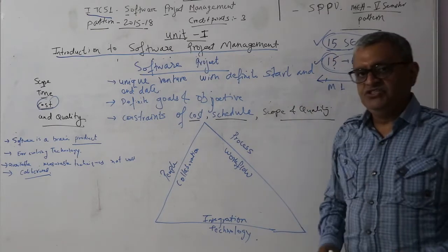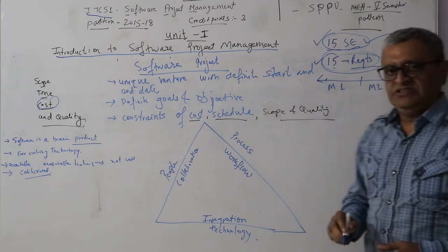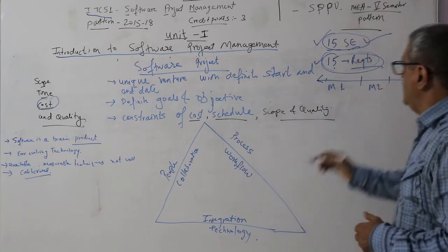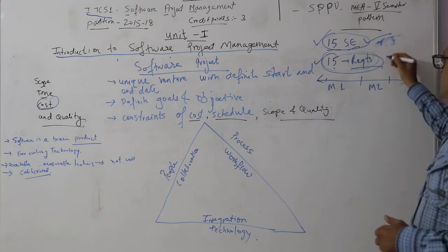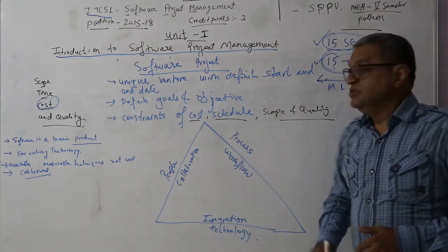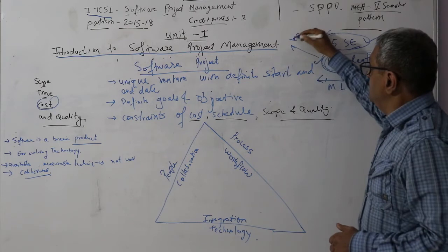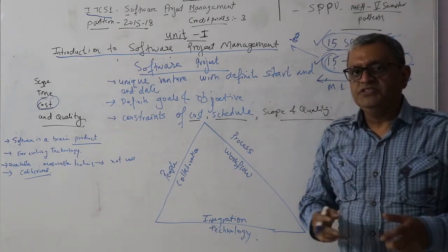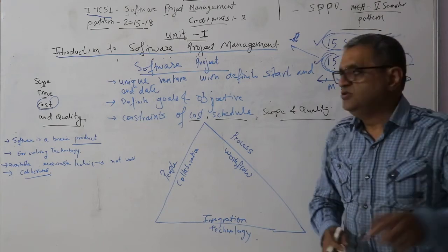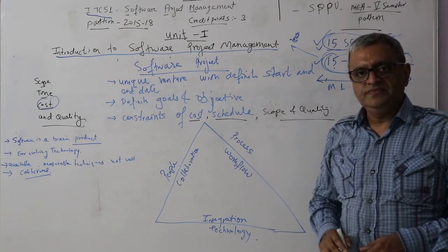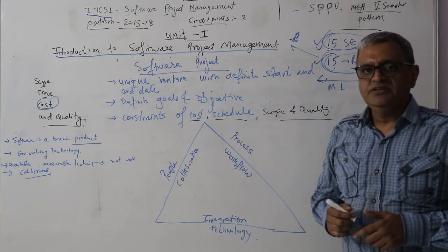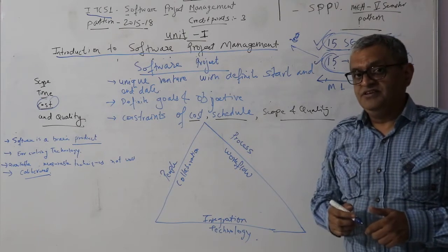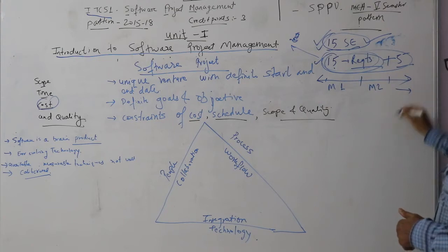Now the customer comes and says they want to add 5 more requirements, so the scope changes to 20 requirements. But the customer says they have no additional budget, so those 20 requirements must be done with the same 15 engineers. As a project manager, I think about it and go back to the customer and say: fine, I can do that, provided you give me an additional month.